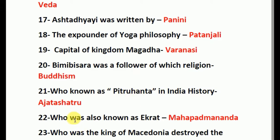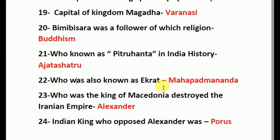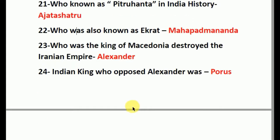Who was also known as Ekrat? The answer is Maha Padmananda. Who was the king of Macedonia who destroyed the Iranian Empire? Macedonia's king was Alexander. The Indian king who opposed Alexander was Porus.